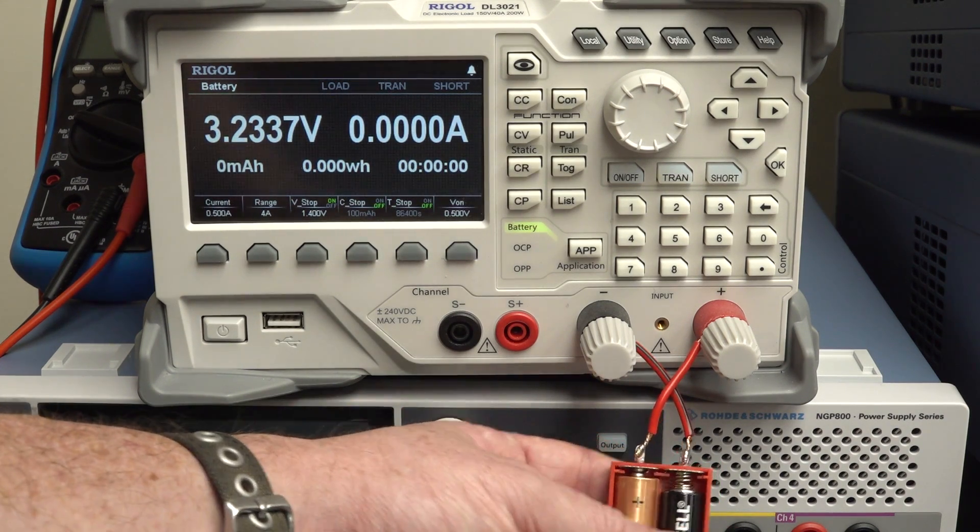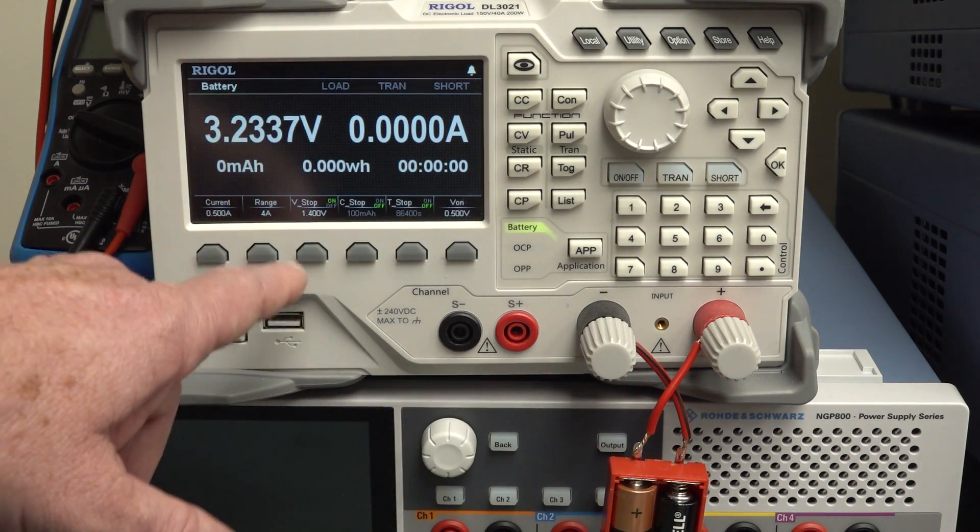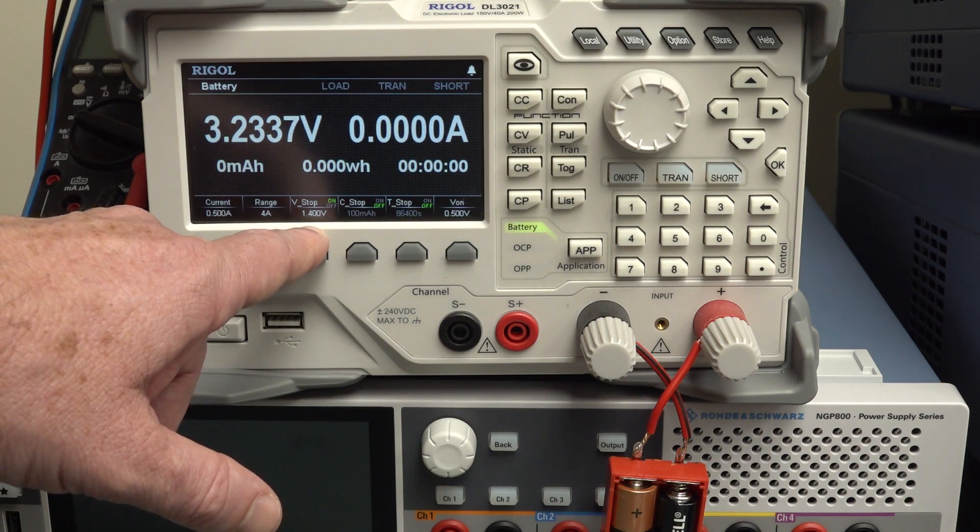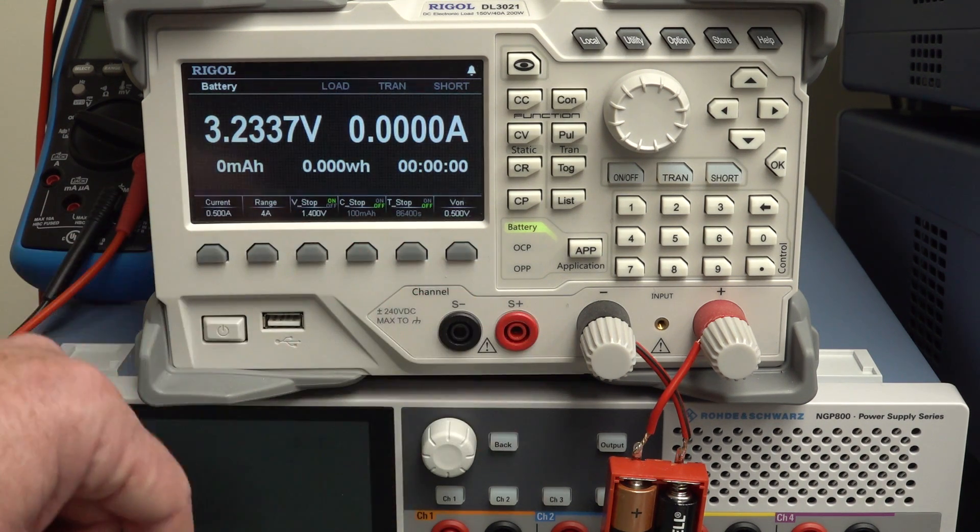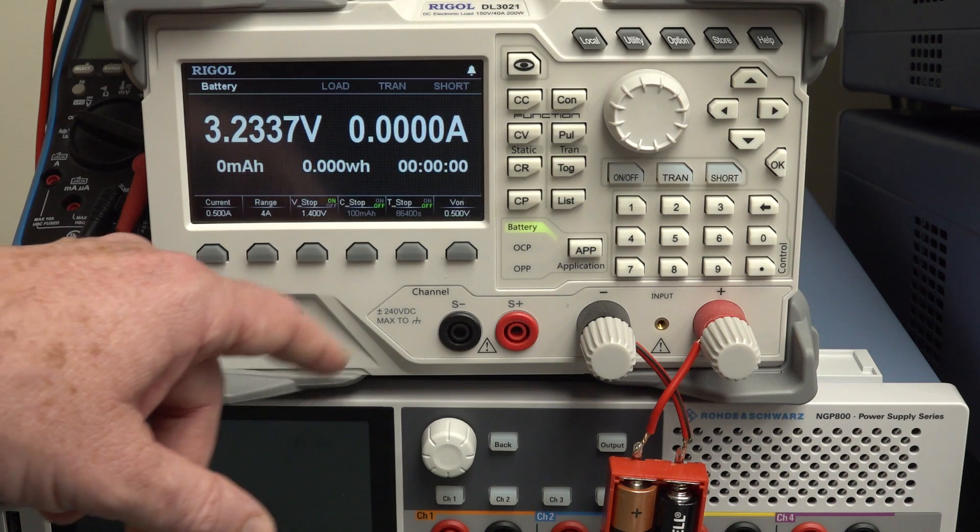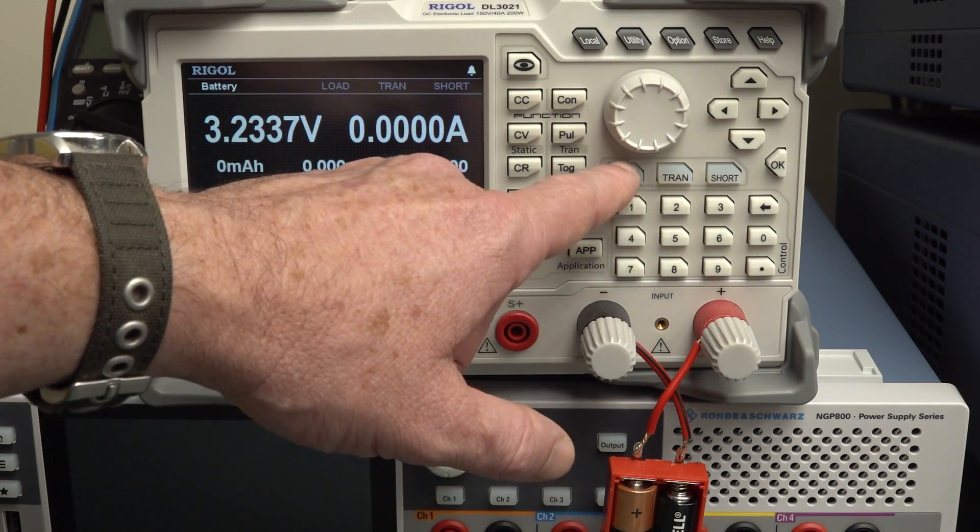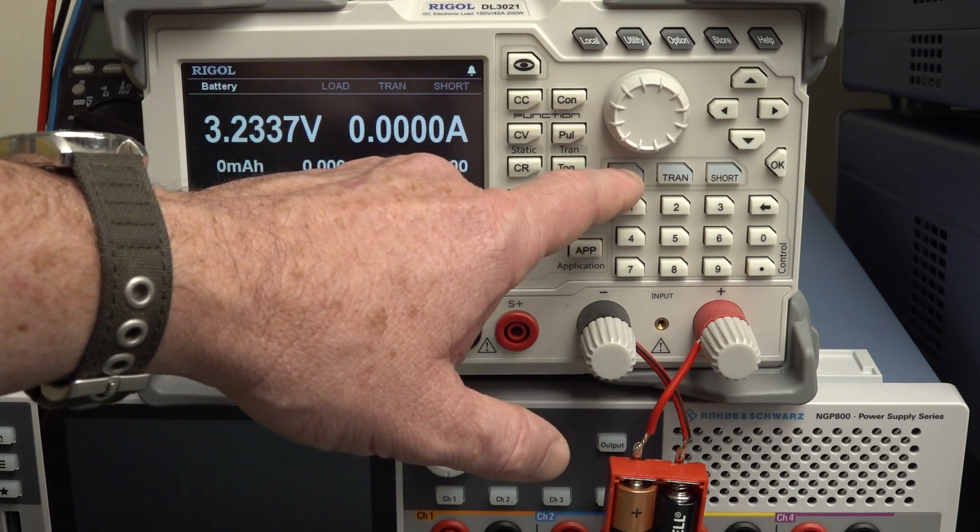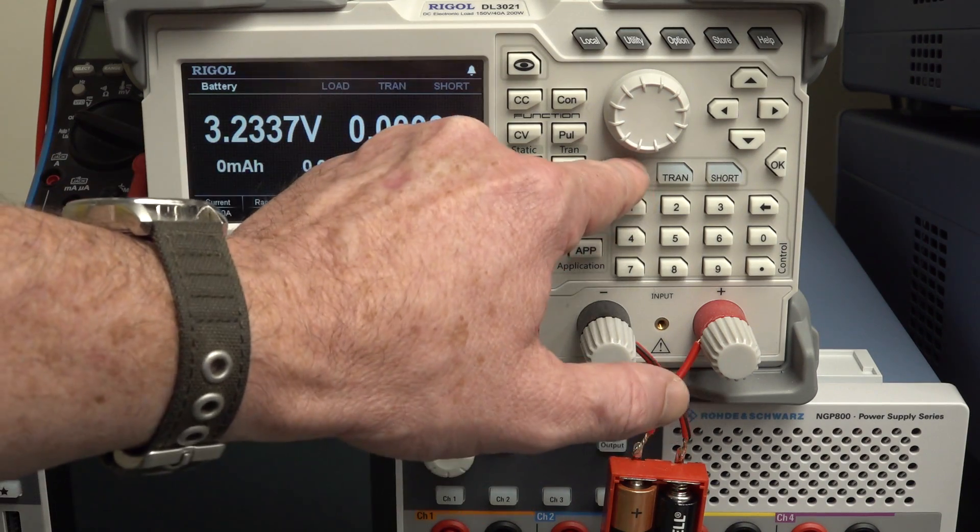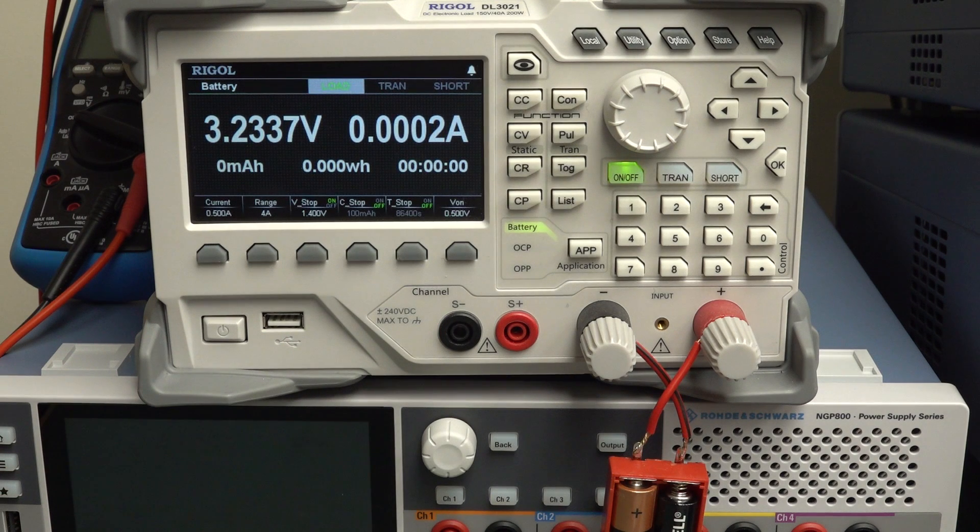So I'm going to do 13 sets here. So let's whack it on. I've got half an amp, 1.4 volts stop voltage, which is total. So 0.7 volts per cell nominal. I won't worry about timers or anything else. So let's switch that on. 3.23 volts open circuit. And we'll see that drop very quickly at half an amp. There we go. Yeah. It drops a lot straight away. So there we go. We've got our half amp there.